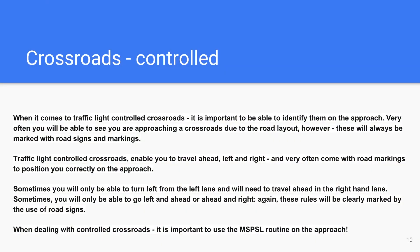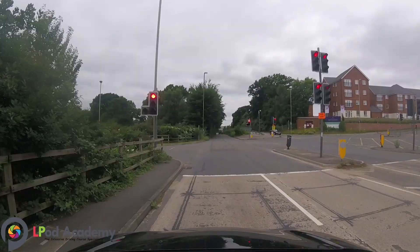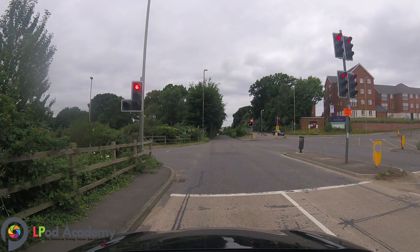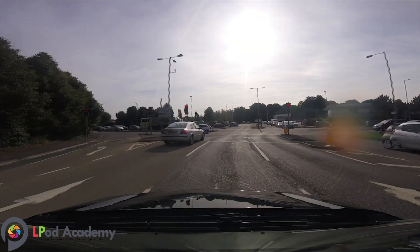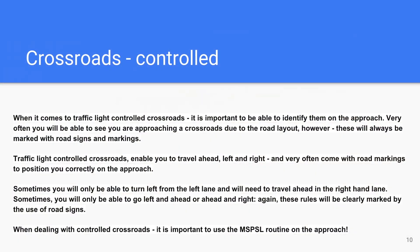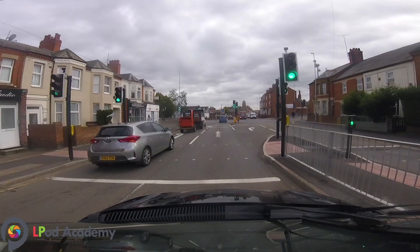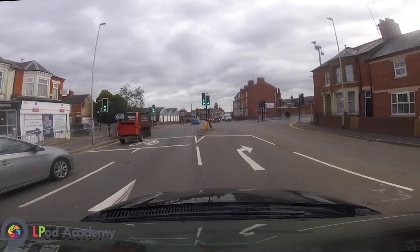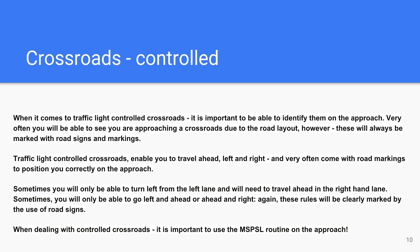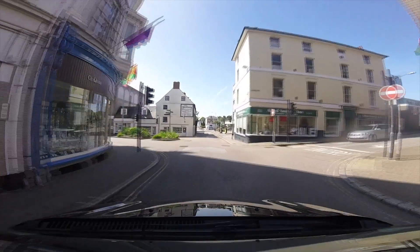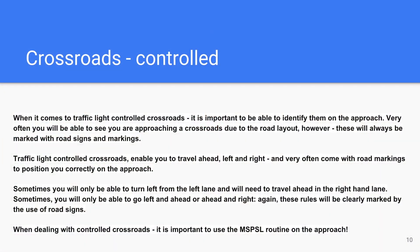When it comes to traffic light controlled crossroads, it's really important to be able to identify them on the approach. Very often you will be able to see that you are approaching a crossroads due to the road layout, and these will always be marked with road signs and markings. Traffic light controlled crossroads enable you to travel ahead, left, and right, and very often come with road markings to position you correctly on the approach. Sometimes you will only be able to turn left from the left lane, or travel ahead in the right-hand lane, and these rules will be clearly marked by road signs.